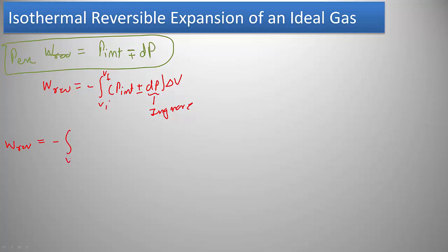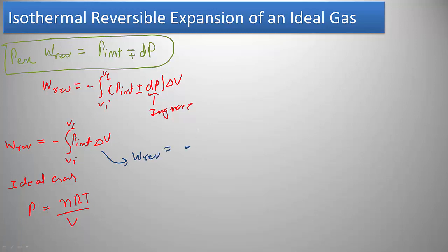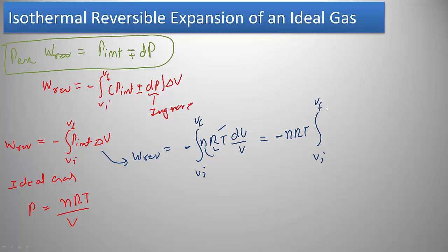Ignoring dP, reversible work becomes minus the integral from V initial to V final of P internal dV. For an ideal gas, P equals NRT divided by V. Substituting this, reversible work equals minus the integral from V initial to V final of NRT dV over V. Since N, R, and T are all constant for an isothermal process, this simplifies to minus NRT times the integral of (1/V) dV from V initial to V final.